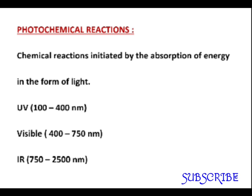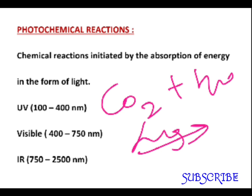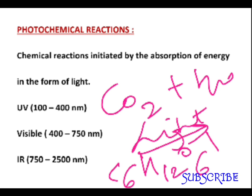This type of reaction has immense importance in nature. For example, photosynthesis. In photosynthesis, carbon dioxide interacts with water in the presence of light and chlorophyll — a green pigment which plays an important role — resulting in the formation of glucose, which is a carbohydrate, and oxygen is released.